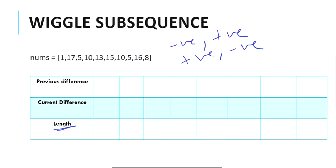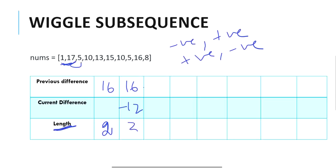Let's start iterating. The first difference is 16, so we assume the previous difference is 16. As the problem states, each element alone is a single wiggle subsequence, so our length is going to be 2 because it considered two numbers. If the difference is 0 we update length to 1; if the difference is greater than 0 or less than 0 we update length to 2 at our first step. Moving to the second step, the difference between 5 and 17 is minus 12, so previous difference is 16 and current difference is minus 12, which is alternatively positive and negative, so length increases to 3.